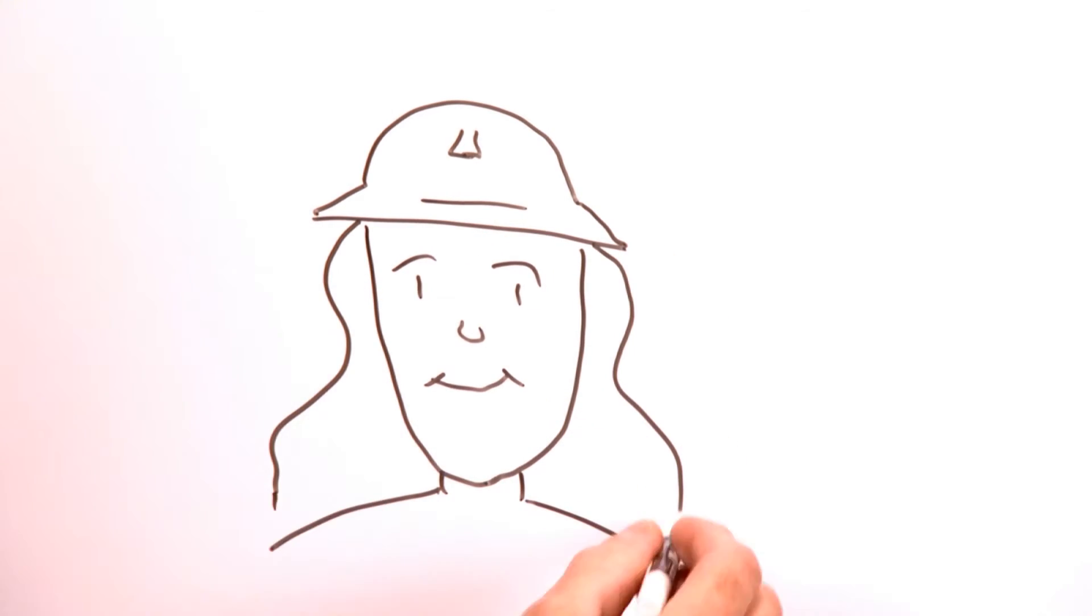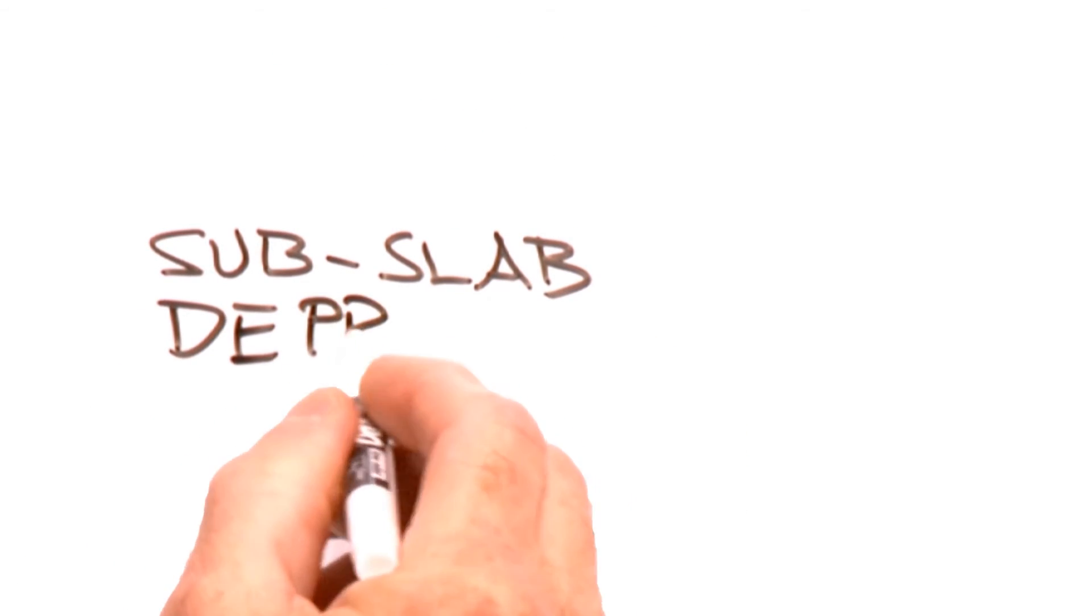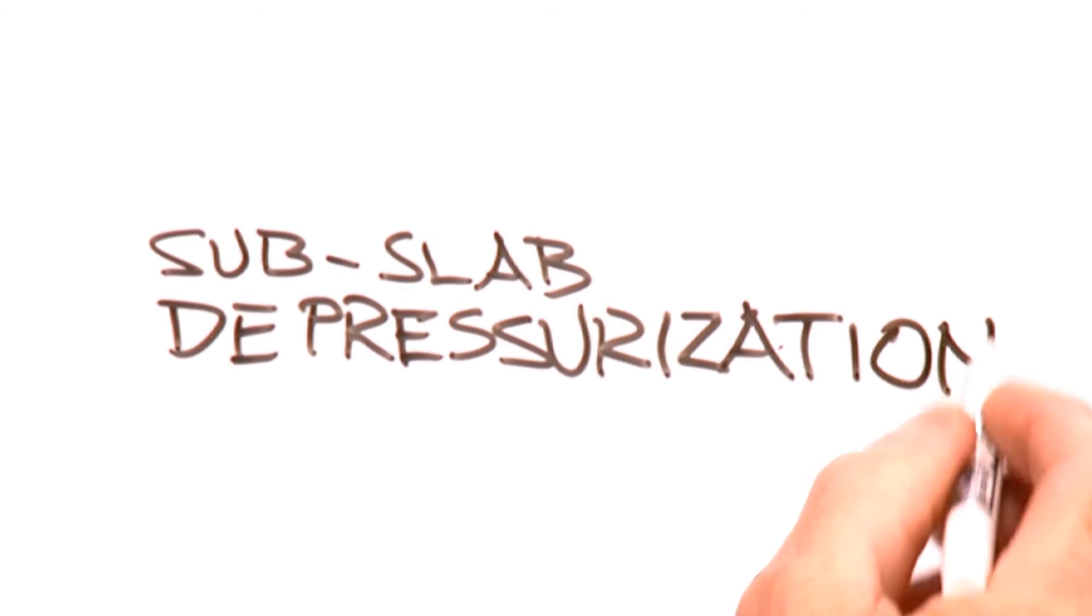If you do have a vapor problem, it can be fixed simply and easily. It's a method called sub-slab depressurization. Sounds fancy, but it's really very simple.